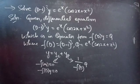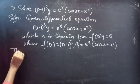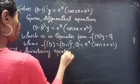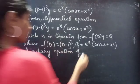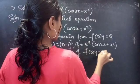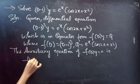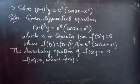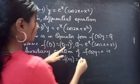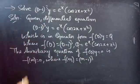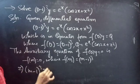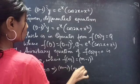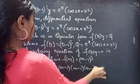Now let's find yc and yp. The auxiliary equation of f(D) into y equals 0 is f(m) equals 0, where f(m) equals (m minus 1) whole cube, since we replace the differential operator D by m. So the auxiliary equation becomes (m minus 1) whole cube equals 0, which we can write as (m minus 1)(m minus 1)(m minus 1) equals 0.